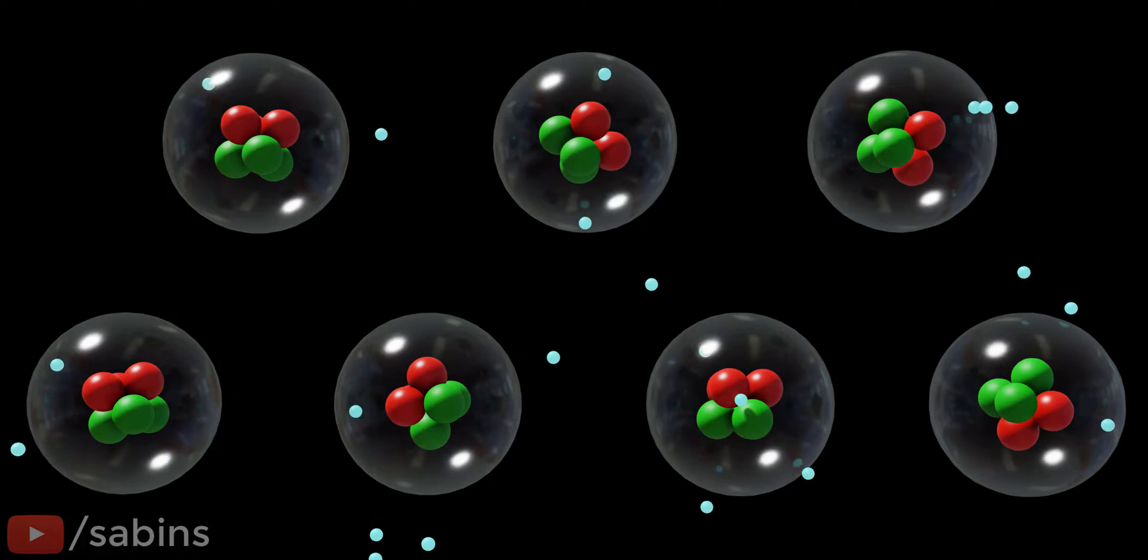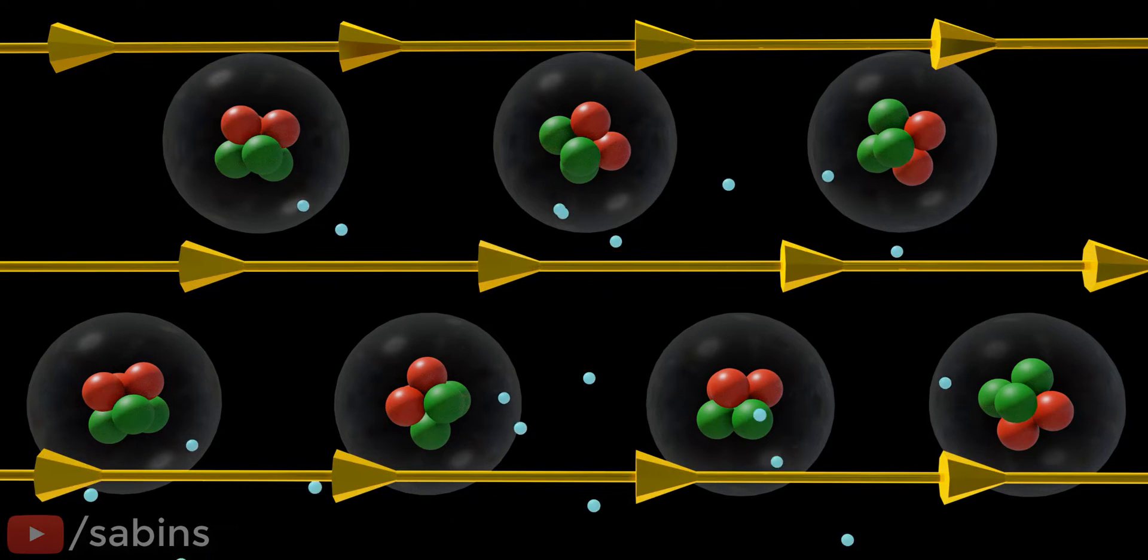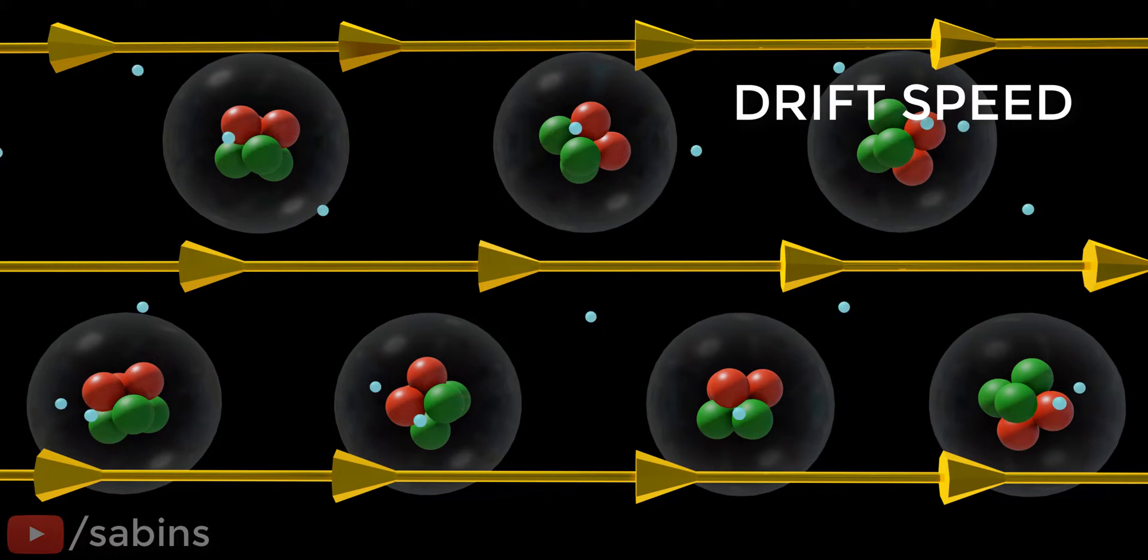This movement of electrons is completely random. If you calculate net electricity through an area, it will be zero. However, when you apply an electric field on the conductor, the electrons will start moving in a single direction with uniform speed. We call this speed drift speed.